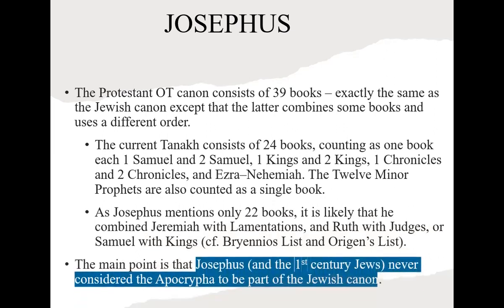The main point is that Josephus and the first-century Jews never considered the Apocrypha to be part of the Jewish canon. They were aware of these books and said they had some value, but they were not regarded as Scripture.